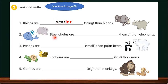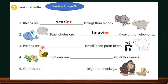Number 2: Blue whales are ___ than elephants. Same as scary, heavy also ends with -y. We have to remove the -y and add -ier, so heavy becomes heavier in the comparative form. Number 3: Pandas are ___ than polar bears. Here, we can add -er at the end of small, so it becomes smaller in the comparative adjective.